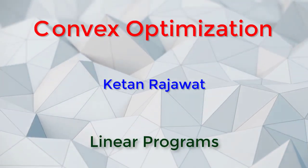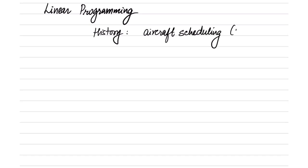Let us take a look at linear programming in some detail. Linear programming is one of the oldest studied optimization problems. It has its history in aircraft scheduling that was done at the time of World War II.